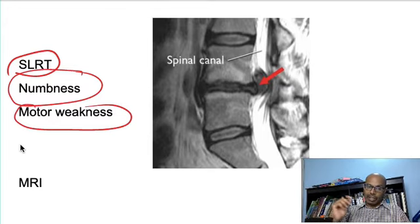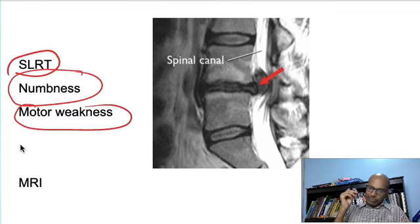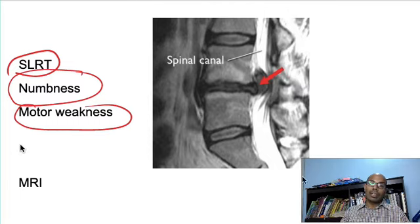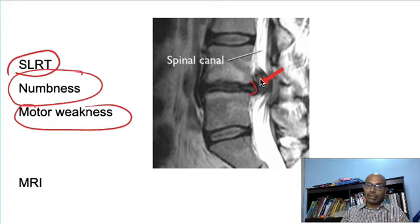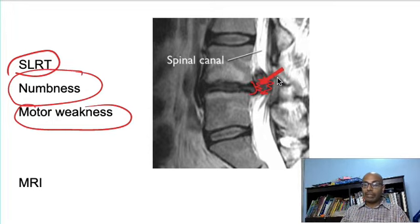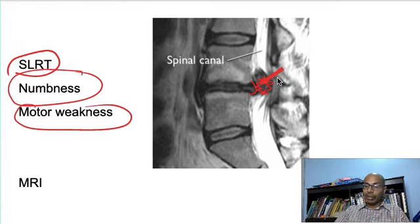The best modality of testing these disc prolapses is through an MRI scan because MRI scan shows soft tissue, spinal cord and the discs in very good detail. Here you can see that the disc is bulging out and pressing on the spinal cord and you can see some signal changes in the spinal cord as well. This is a significant compression. Therefore MRI is the investigation of choice for disc prolapse.